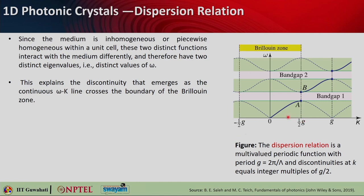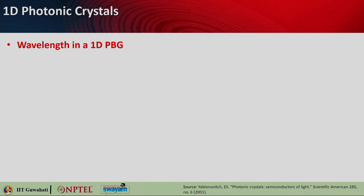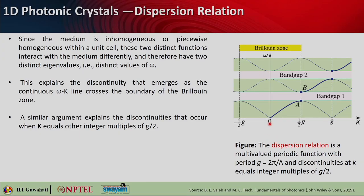Since the medium is inhomogeneous — or piecewise homogeneous within a unit cell — the two distinct functions interact with the medium differently, giving two different eigenvalues (distinct values of omega). That explains the discontinuity that emerges from the continuous omega-k line across the Brillouin zone boundary. These are the Brillouin zone boundary vertical dashed lines — whenever they cross the Brillouin zone boundary, you find a discontinuity. A similar argument explains discontinuities at k equal to any other integral multiple of G/2. Also, across the central spatial frequency 0, this part and that part are symmetrical — you can draw a mirror image of what is happening on one side to construct the band diagram. The forward propagating waves are on one side, backward propagating waves on the other.